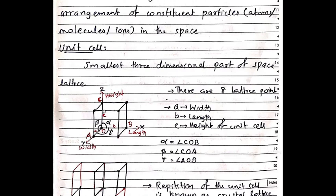There are eight lattice points. Now, 'a' is the size of the unit cell — the length of the unit cell. The height of the unit cell is the same. There are two directions. We have intercepts along the same axes. The axes are X, Y, and Z.